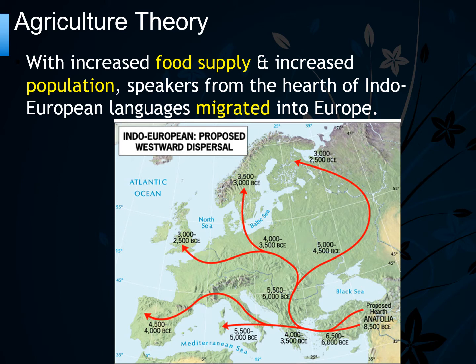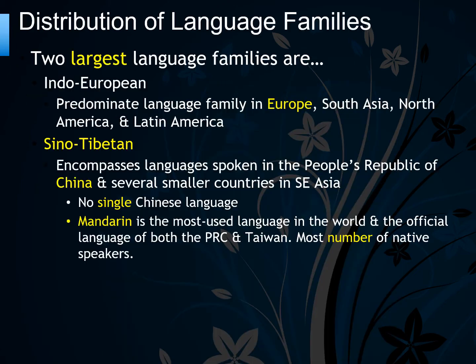The two largest language families are the Indo-European and Sino-Tibetan. The Indo-European language family is mainly found in Europe, South Asia, North America, and Latin America.